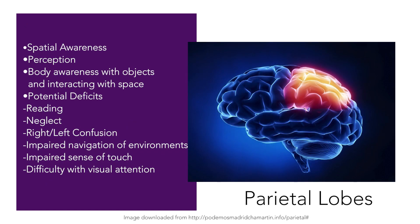Moving posteriorly now from the frontal lobes, we have the parietal lobes. The parietal lobes contain the sensory cortex in which information is received from various parts of the brain and the spinal cord about different sensations. This lobe is also involved in spatial awareness, perception, and body awareness with both objects and interacting in space. For example, some people with injuries to this part of the brain can have more difficulty navigating familiar areas and difficulty using familiar objects like a toothbrush or a key to a house. Visual attention is another area that can be impacted; damage to the right parietal lobe in particular can cause something known as visual neglect, which is when you are not attending to one part of space, usually the left side — the opposite side from the location of the injury.